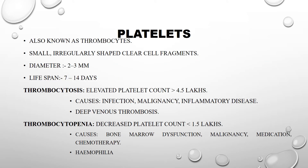Thrombocytes (platelets) are small, irregular-shaped cell fragments with a diameter of 2–3 micrometers and a lifespan of 7–14 days. Thrombocytosis refers to an elevated platelet count greater than 4.5 lakhs, associated with infection, malignancy, and inflammatory disease, including deep venous thrombosis. Thrombocytopenia refers to a decreased platelet count below 1.5 lakhs, caused by bone marrow dysfunction, malignancy, medication, and chemotherapy.